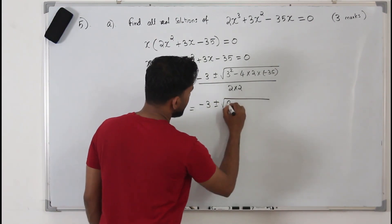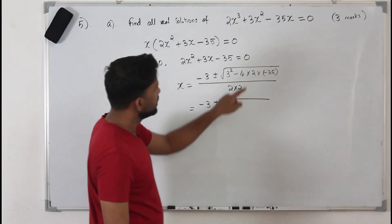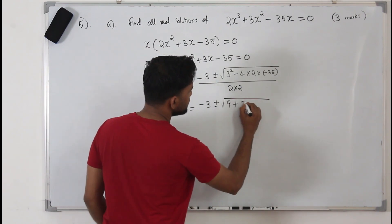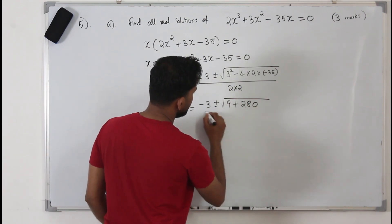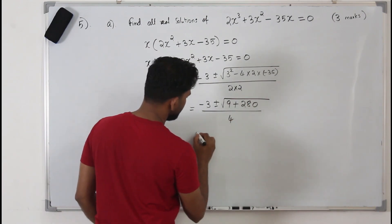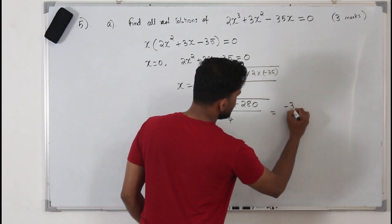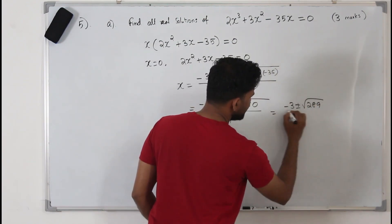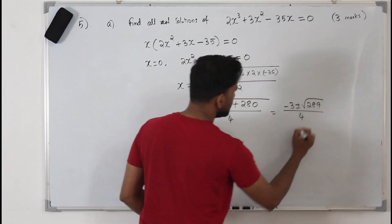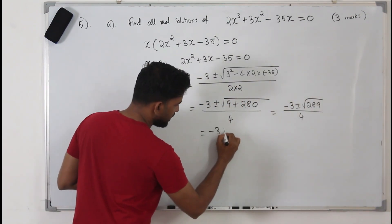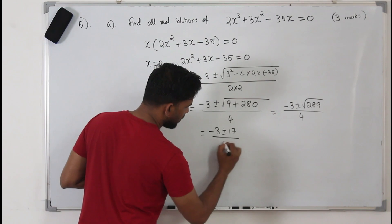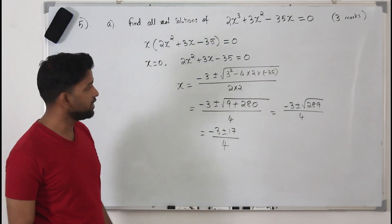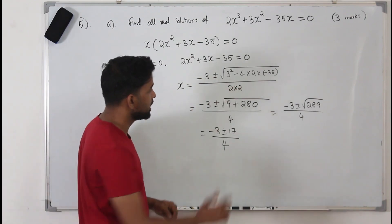When you simplify, you get -3 ± √(9 + 280) / 4, which is -3 ± √289 / 4. The square root of 289 is 17. So you have (-3 ± 17) / 4. You can just use your calculator to simplify this much more easily.